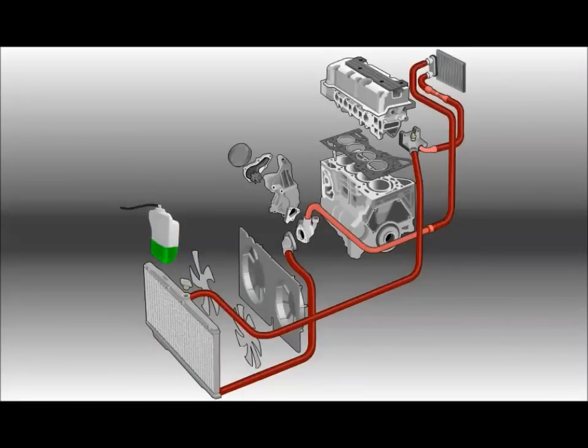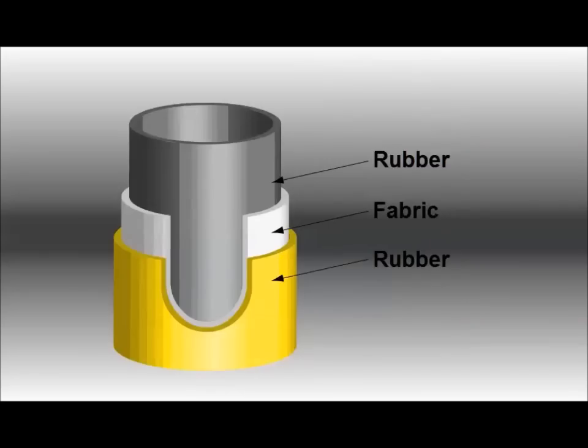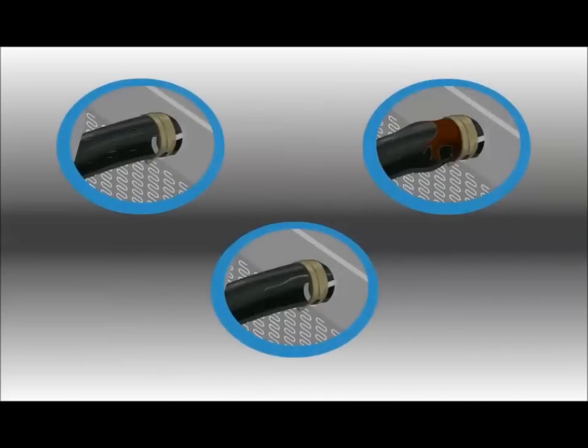Coolant system hoses provide a path for the coolant and use rubber and fabric construction to help isolate engine vibration from the external components. Because of this, hoses require regular inspection for wear, leaks, and damage.